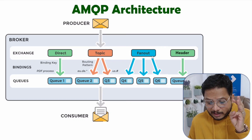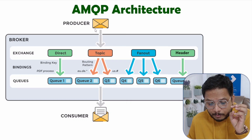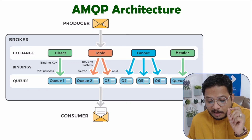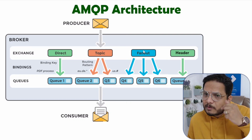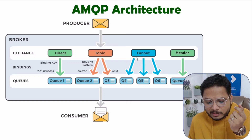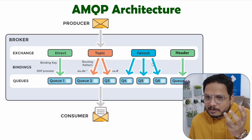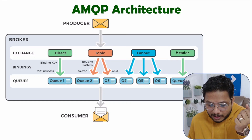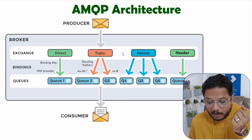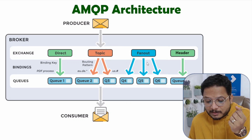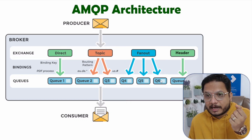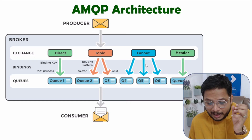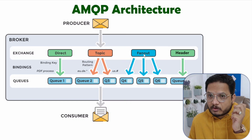The third exchange type is fanout. When a producer sends a message with a fanout exchange, the fanout forwards messages to multiple queues simultaneously. Routing is well-defined here — multiple queues receive the same message.